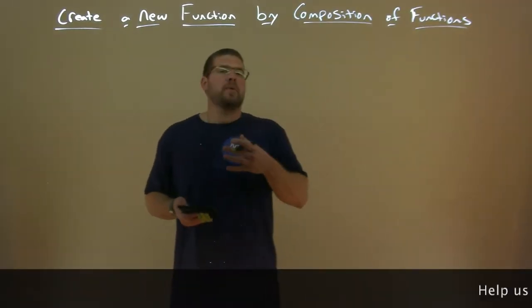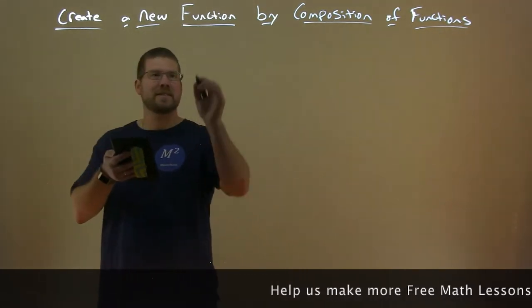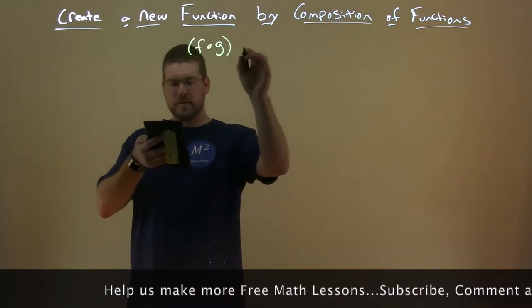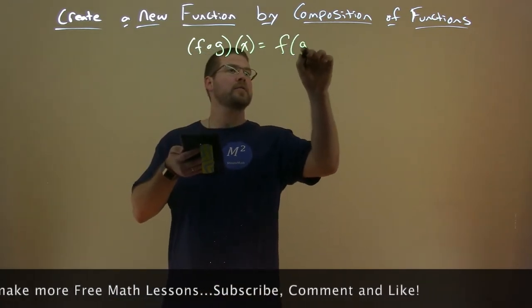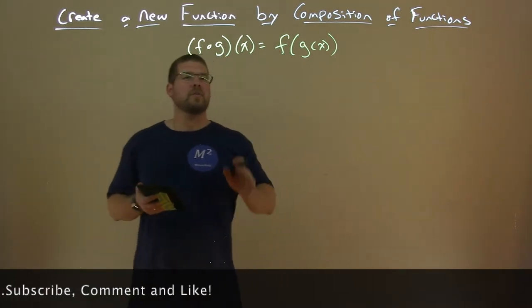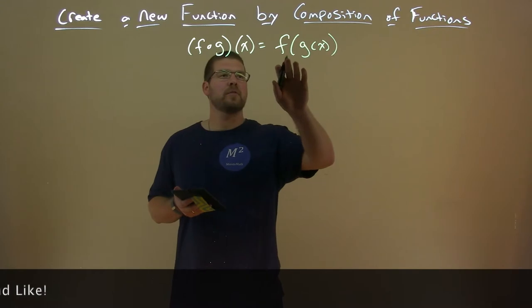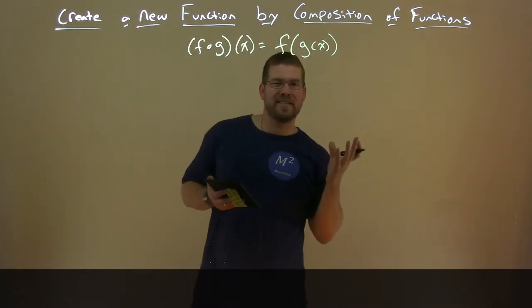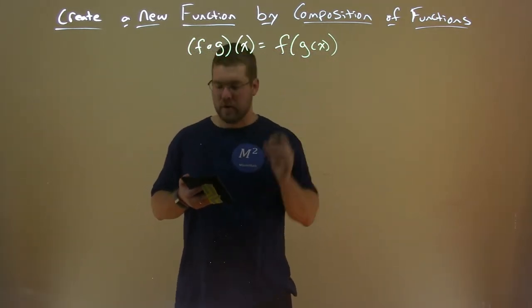So we've talked a little bit before about this, and a common expression for a composition of functions is this: f of g of x is equal to f of g of x. What we're saying is you take that g of x function and substitute it into the x value of our function f.